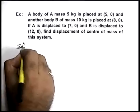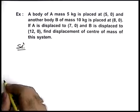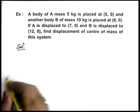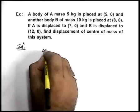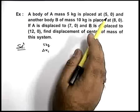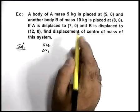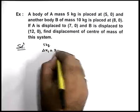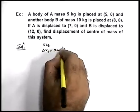We've just studied the concept for calculation of displacement of centre of mass. Here we first find delta x-one, that is the displacement of 5 kg body. It is from 5 comma zero to 7 comma zero, so we can write delta x-one as 2 units.